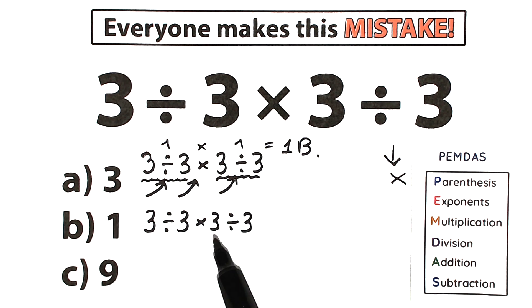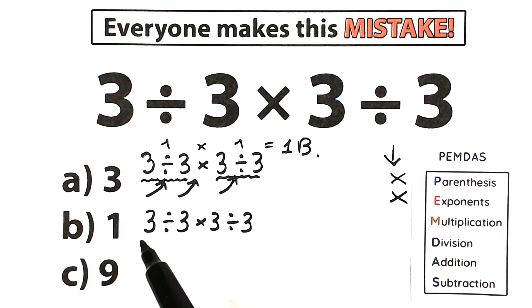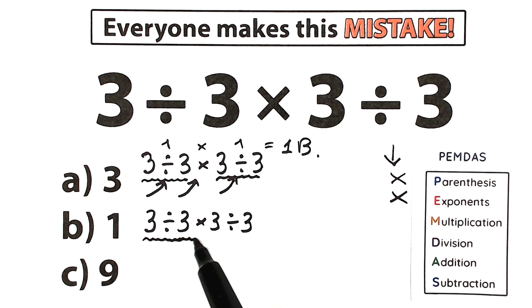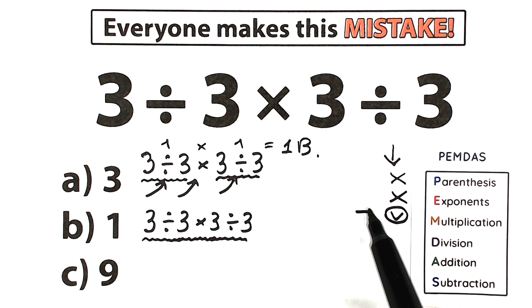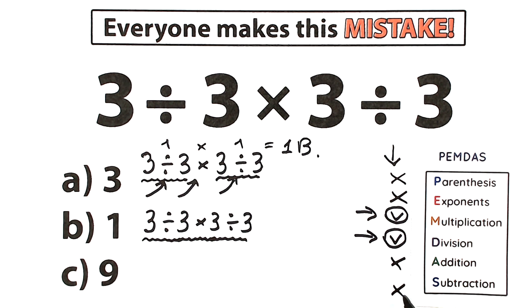What about exponents? Let's scan for squares, cubes, or powers — I don't see any. We have a regular expression without any exponents, so we skip that part as well. What about the multiplication-division group? We have a division sign here and next to it multiplication, so we are interested in those. We also have an addition-subtraction part, but we don't have any addition or subtraction signs, so we skip that. We have only multiplication and division.